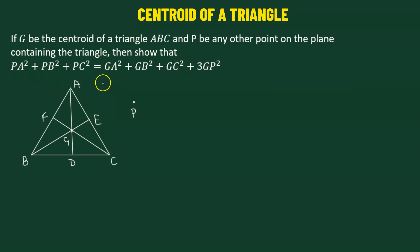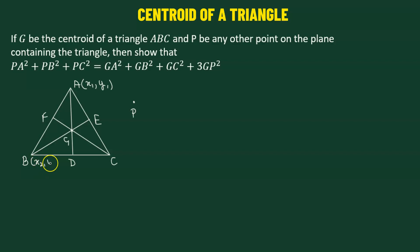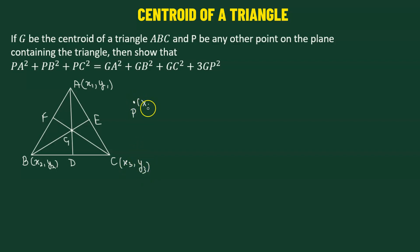What we'll do is specify the coordinates of each point. So A has coordinates (x1, y1), B has coordinates (x2, y2), C has coordinates (x3, y3), and we'll also define the coordinates of point P as (x, y).